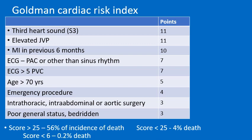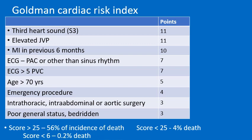The Goldman Cardiac Risk Index assigns points for: third heart sound and elevated JVP, MI in the previous 6 months, ECG showing premature atrial contractions or rhythm other than sinus, more than 5 premature ventricular contractions, age more than 70 years, emergency procedure, intrathoracic/intra-abdominal or aortic surgery, and poor general condition. When the score is less than 6, perioperative mortality risk is less than 0.2%. Between 6 and 25, risk is less than 4%. More than 25, risk is up to 56%.